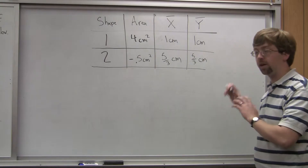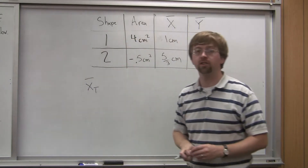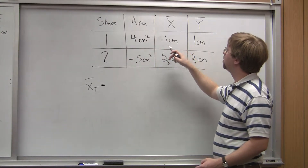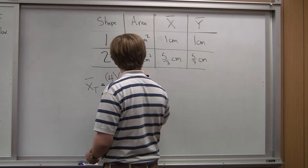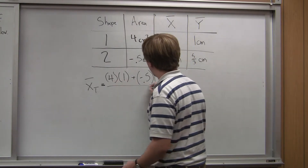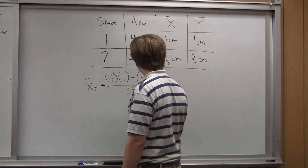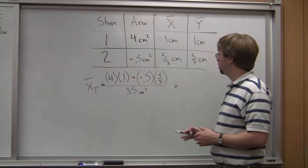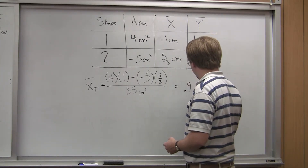We've got our table, and this sets up the problem. The x-bar total — the overall x-coordinate of our centroid — is equal to area one times x1, plus area two times x2, divided by the overall area. So that's four times one, plus negative 0.5 times five-thirds, all divided by the overall area of four minus 0.5, which is 3.5 centimeters squared. Solving those numbers gives an x-bar value of about 0.90 centimeters.